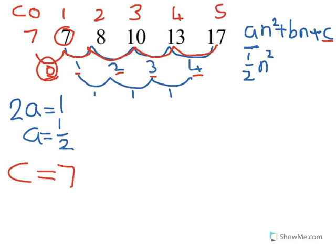Now I know this part of my general formula — it's plus 7 on the end. Now we need to find B. To find B, always use the first piece of information in your sequence. We know that the first term is 7, so when N equals 1, the formula will equal 7.